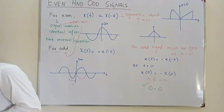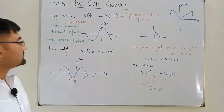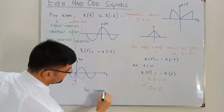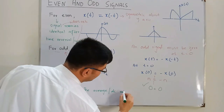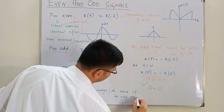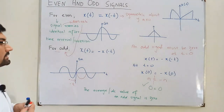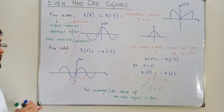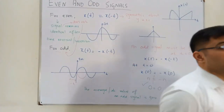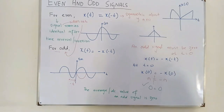Another property: the average value, or DC value, of an odd signal is zero. You can see this from the sine wave — the same area is above the x-axis and below the x-axis, they cancel each other out, so the net average value of the function is zero.